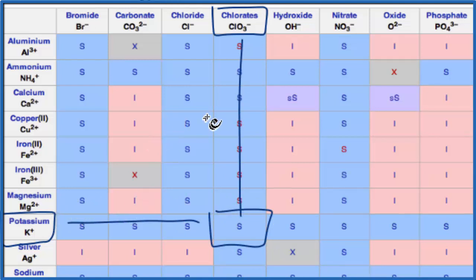It'll dissolve. It'll split apart into its ions, dissociate. You'll have K plus ions. And then you'll have the ClO3 minus, the chlorate ions. And they'll be aqueous, dissolved in water. So you can put an AQ after them.